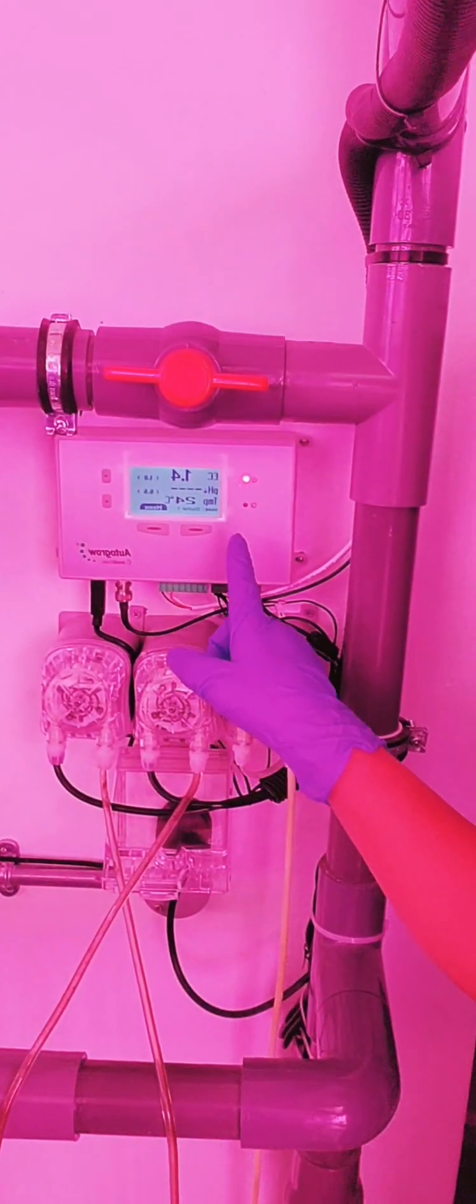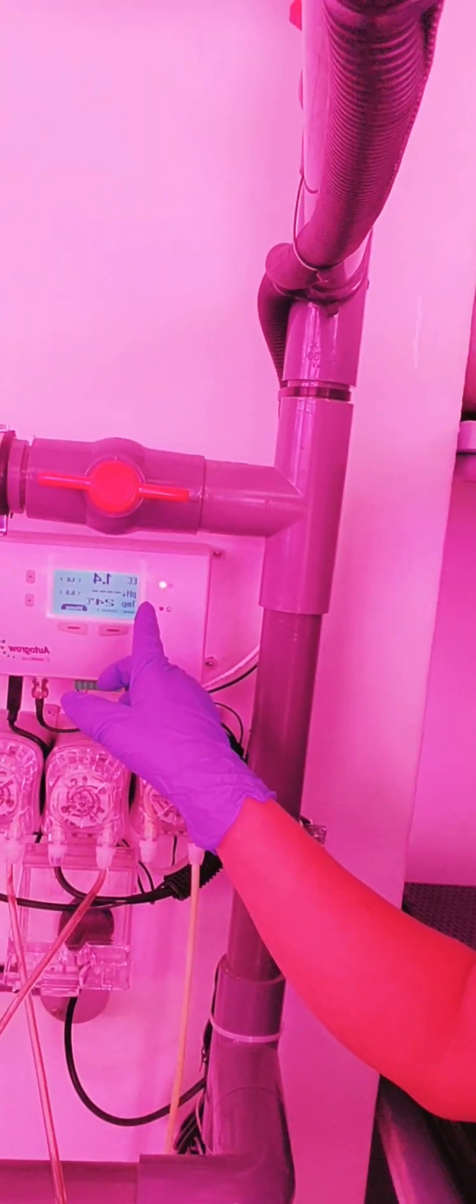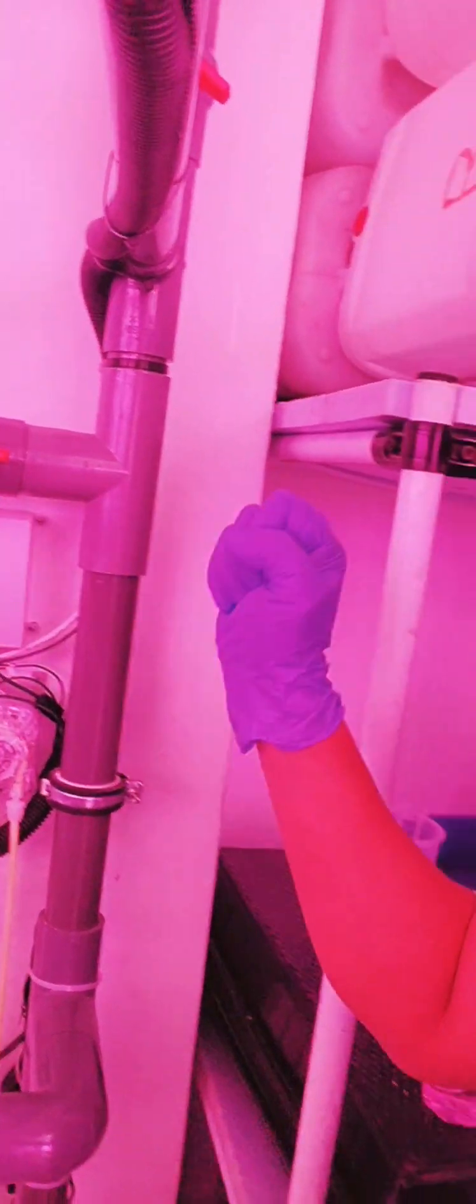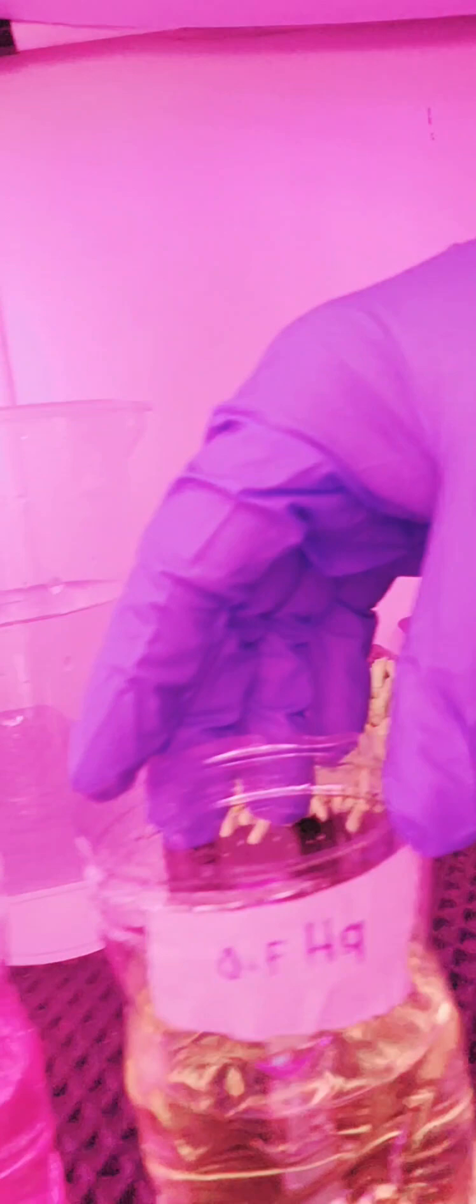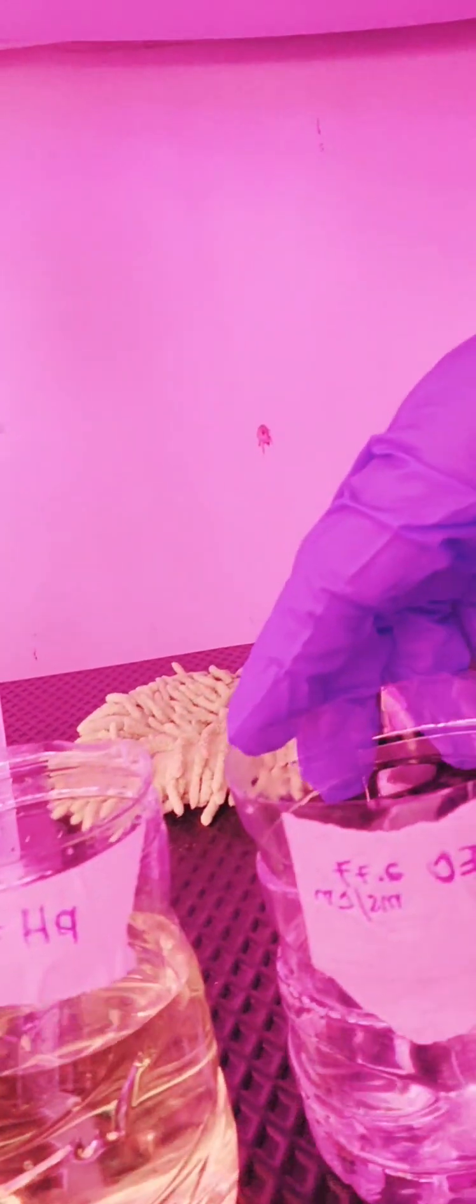Today, I'm going to execute calibration on the IntelliGrow autodosing sensor, which is the pH and EC. As you can see, there is the monitor. Before we push it on the calibration steps, we have to prepare first everything. Like, pH 4.0, pH 7.0, and then EC 2.77.